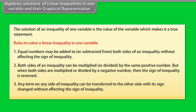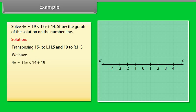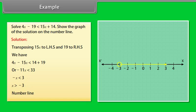Rule 3 — any term on either side of an inequality can be transferred to the other side with its sign changed without affecting the sign of inequality. Example: Solve 4x − 19 < 15x + 14 and show the graph on the number line. Transposing 15x to LHS and 19 to RHS: 4x − 15x < 14 + 19, so −11x < 33, giving −x < 3, therefore x > −3. We draw an open circle at −3 and an arrow to the right on the number line.